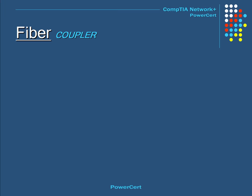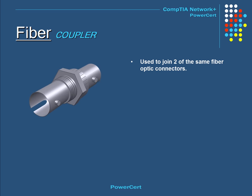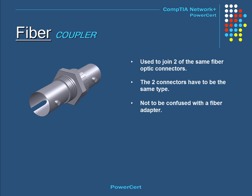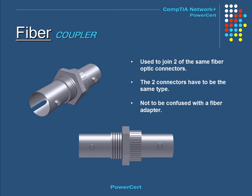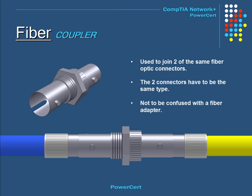If you wanted to join two fiber optic connectors, you would use a fiber coupler. Fiber couplers are used to couple or join two of the same fiber optic connectors — the two connectors have to be the same. These are not to be confused with fiber adapters, because fiber adapters are for joining two different connectors together, such as an ST to an SC, or an LC to an SC. Here is an example of a fiber coupler joining two ST connectors together.